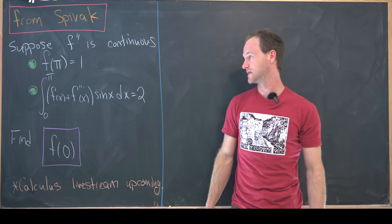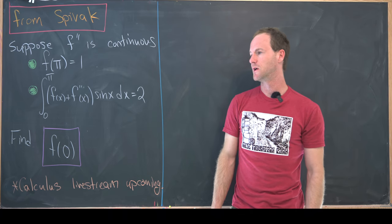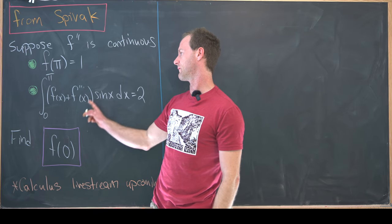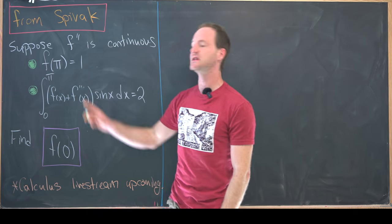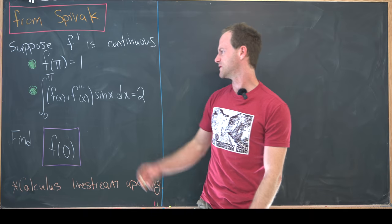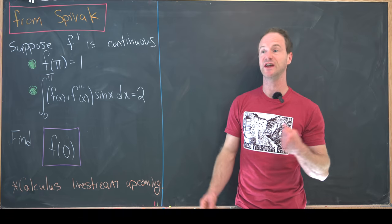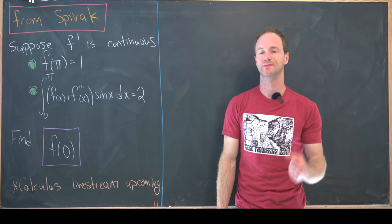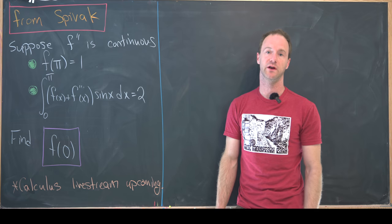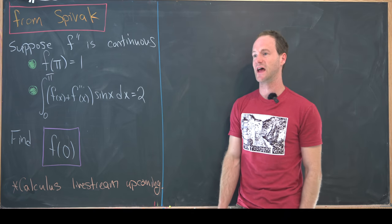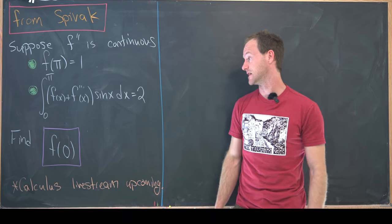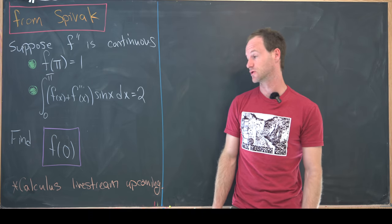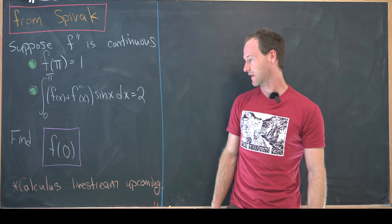Some hints built into the writing of this problem are the fact that we've got the derivative of a function here inside of an integral, and we've also got a sine function, which changes into cosine when you take a derivative or an integral and changes back into sine when you take another derivative or an integral. Those things together tell us that probably we need to use integration by parts, and that's exactly what we'll do.